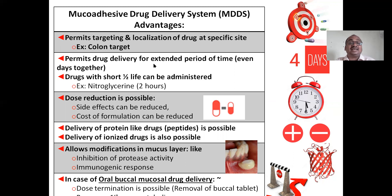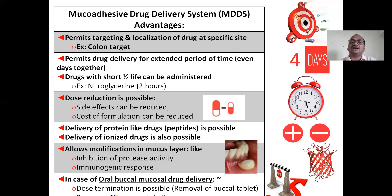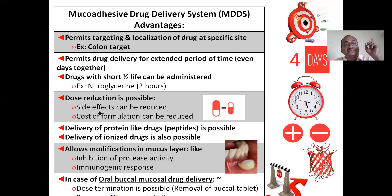The second advantage: it permits drug delivery for an extended period of time — four, five, six, seven, eight, nine days. This is especially beneficial for drugs with a very short half-life. For example, nitroglycerin has only a two-hour half-life, so you'd need to take one tablet every two hours — that is not practical. With mucoadhesive formulations, it sticks to the GIT mucosal surface and keeps releasing. Also, dose reduction is possible — a large dose can be made into a small dose, thereby reducing dose-dependent side effects and the cost of the formulation.